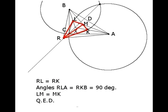If we draw a straight line between points R and M, we will get congruent right triangles RLM and RKM, which proves that the segments LM and KM are of the same length.